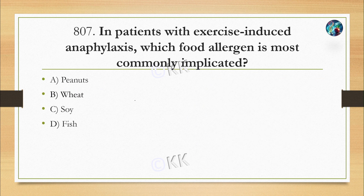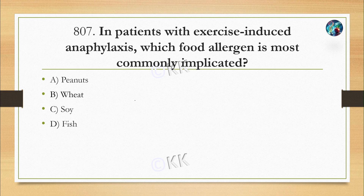In patients with exercise-induced anaphylaxis, which food allergen is most commonly implicated? Option A: peanut. Option B: wheat. Option C: soy. Option D: fish. The correct option is Option B — wheat. WDEIA (wheat-dependent exercise-induced anaphylaxis) occurs when wheat is ingested and physical activity acts as a trigger. This is generally associated with gliadin, a wheat protein, which increases gut permeability and mast cell activation during exercise. Wheat supplements are not recommended before exercise.